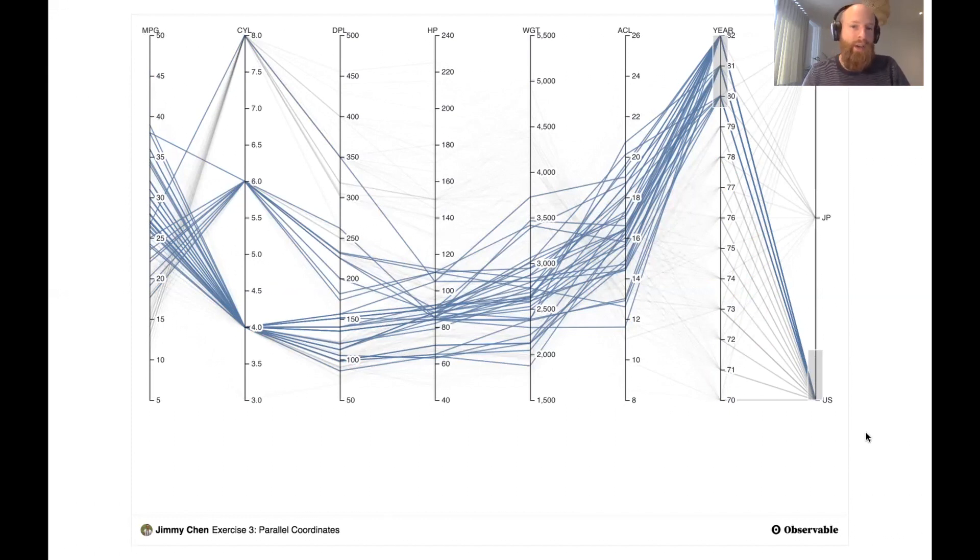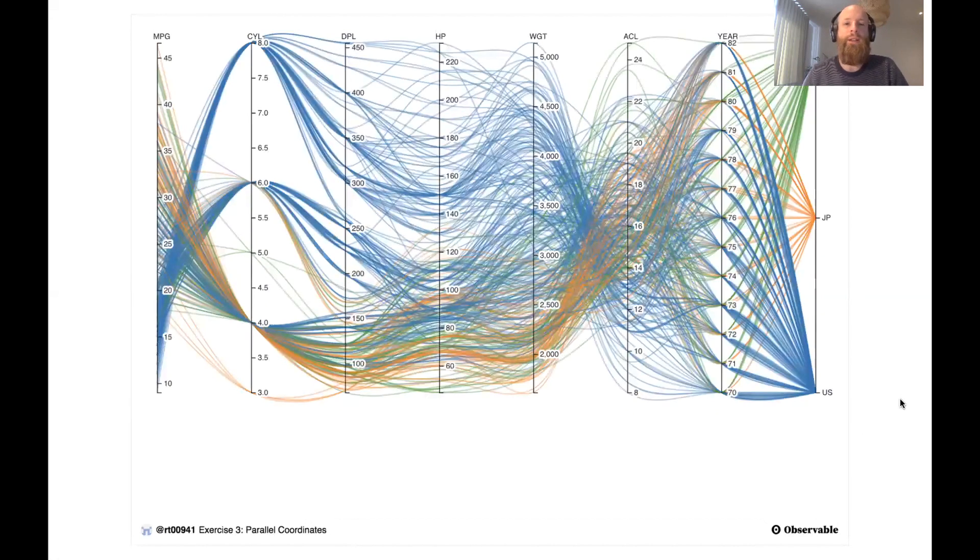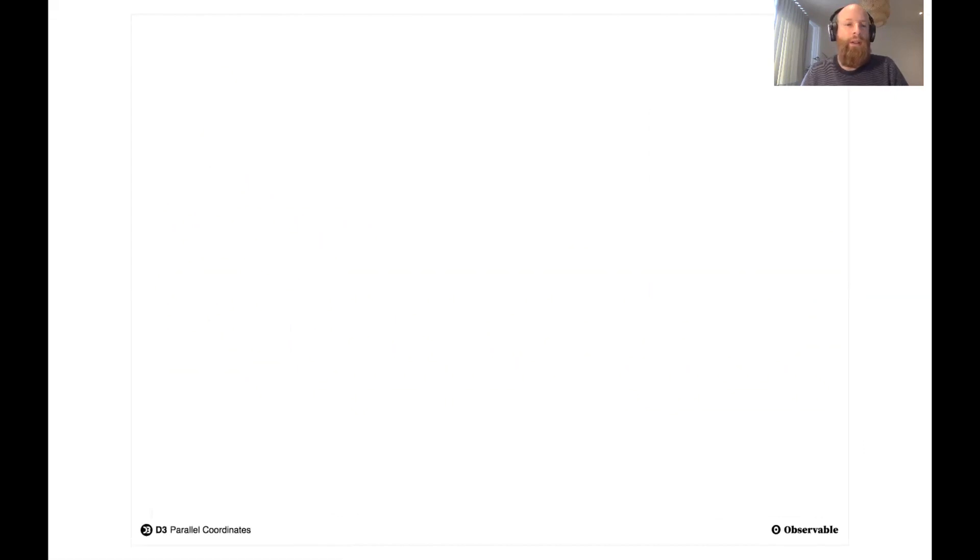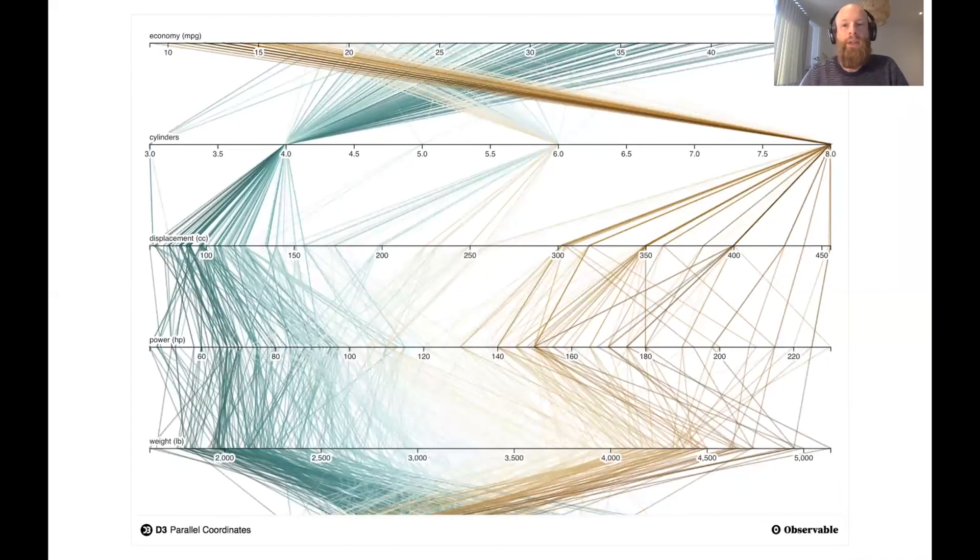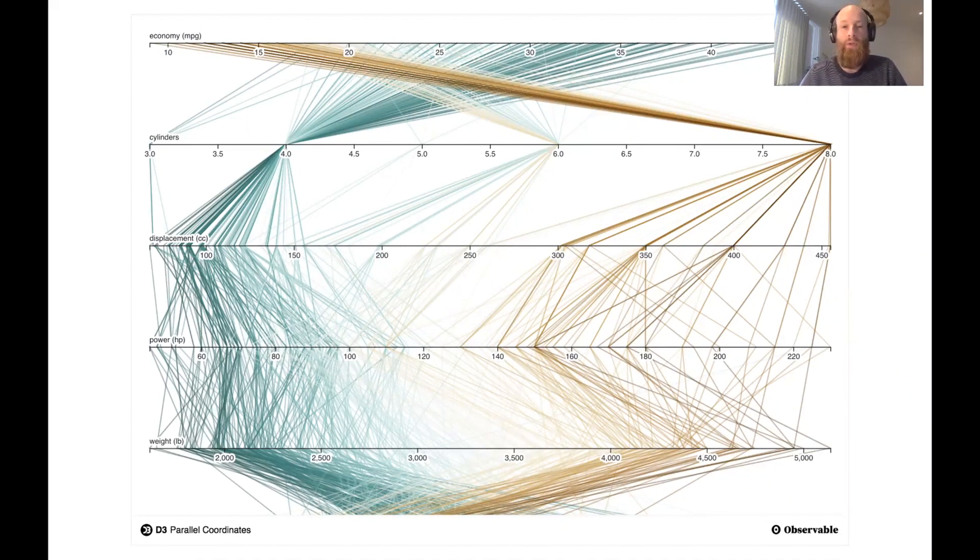So let's see some design variations and related data visualization techniques of parallel coordinate plots. In the previous one, we used straight lines, but nothing keeps you from using curves. It might improve the legibility of your parallel coordinate plot. It might also not be, but nothing keeps you from trying it out. And of course, nothing can keep you from rotating the parallel coordinate plots and have the axes horizontally instead of vertically. This might fit your screen size better or might fit better into your dashboard, for example. So this is also a variation of the design of parallel coordinate plots.